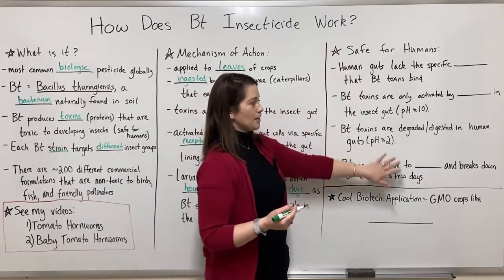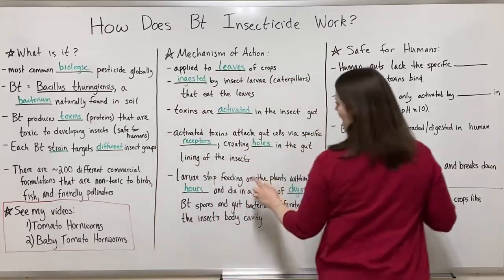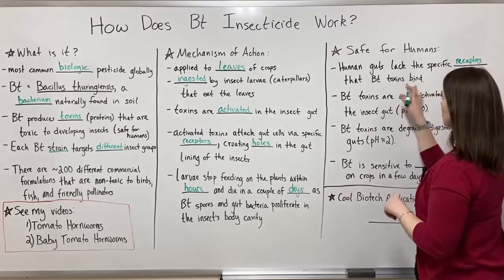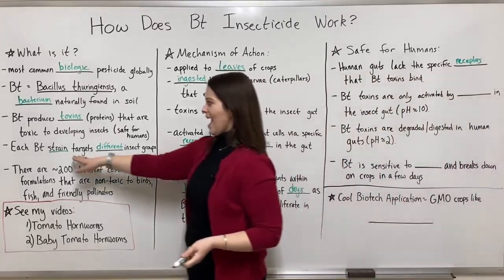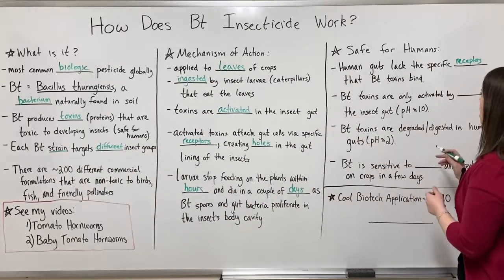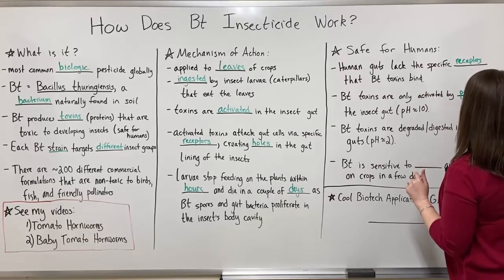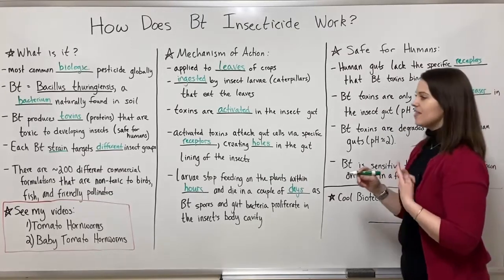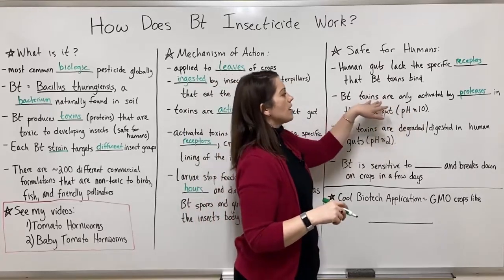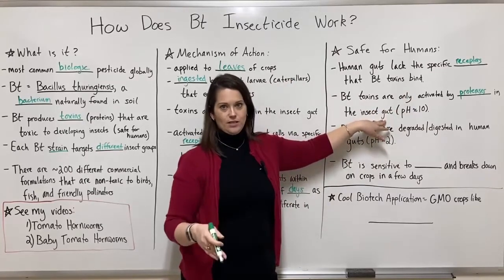I've said several times this is safe for humans, so now I'll explain all the reasons why. First, human guts lack the specific receptors that BT toxins bind, so none of these strains or formulations can actually attack the human gut lining. Also, BT toxins are only activated by proteases — a kind of enzyme — present in the insect gut, which is about pH 10. So there are no proteases in the human gut to activate the toxins anyway.